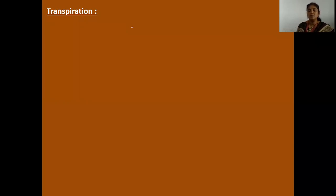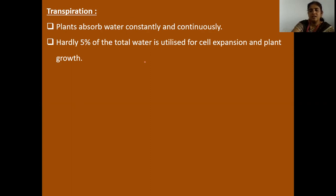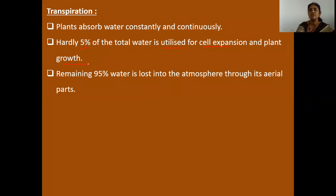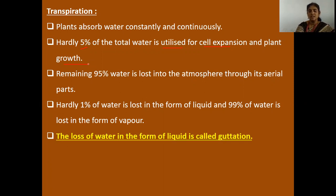Now a brief introduction to transpiration. Plants absorb water constantly and continuously, but hardly 5% of the total water is utilized for cell expansion and plant growth. About 99% of water is lost in the form of water vapor through aerial parts — this is known as transpiration. The loss of water in the form of liquid is called guttation.